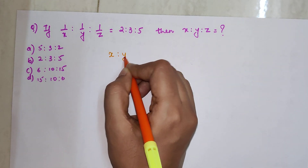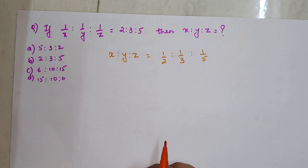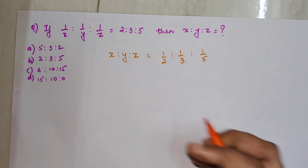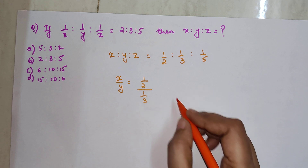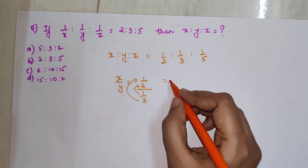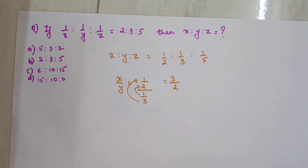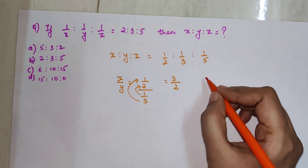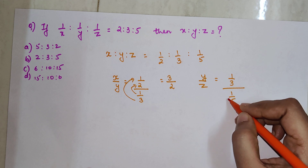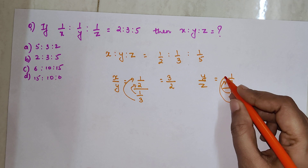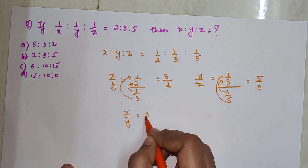So X : Y : Z is nothing but 1/2 : 1/3 : 1/5. But this is not how the options are represented, so we write X/Y = (1/2) ÷ (1/3). Fraction over a fraction — the numerator gets multiplied by the denominator and vice versa — so X/Y = 3/2. Similarly, Y/Z = (1/3) ÷ (1/5), which gives us 5/3.